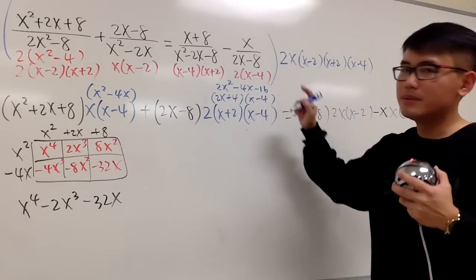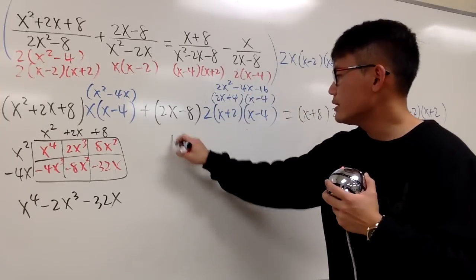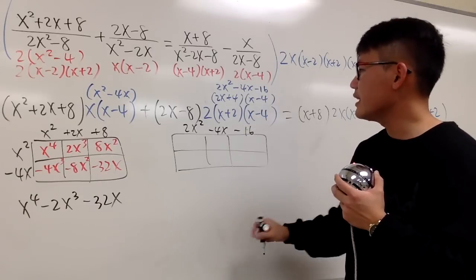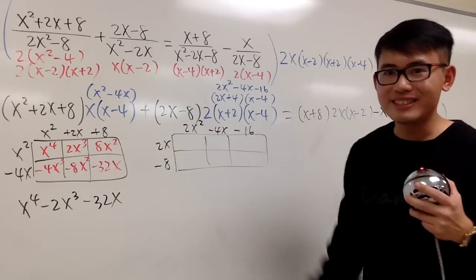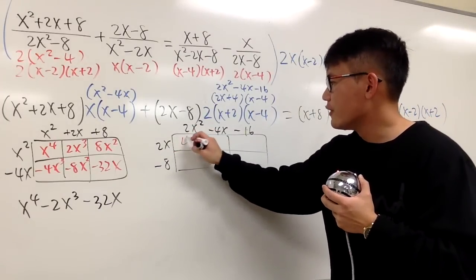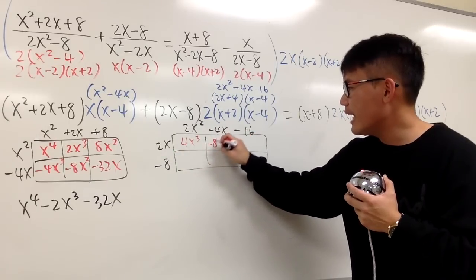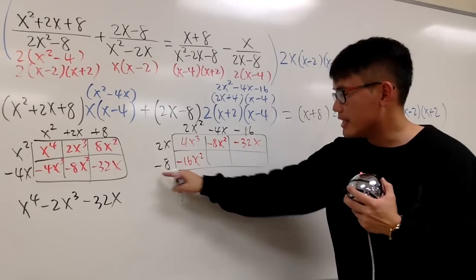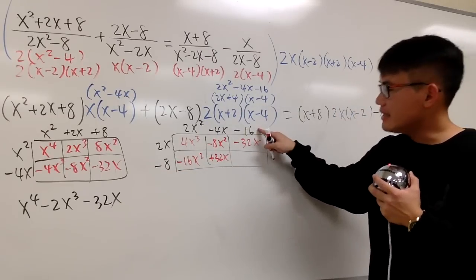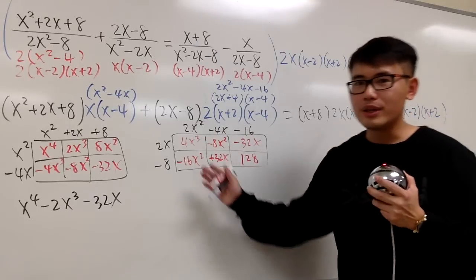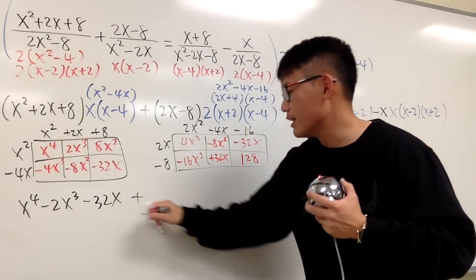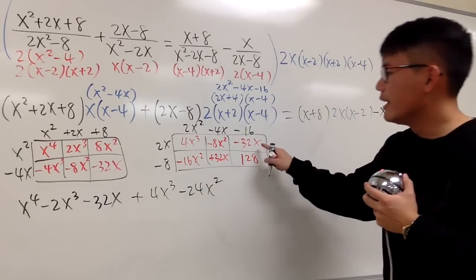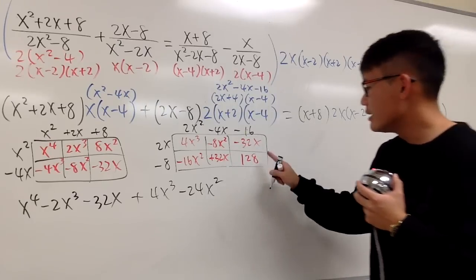And once again, we have a two-term situation times another three-term situation. So let me use the box method right here. I will draw the box and put down this on the top: 2x squared minus 4x minus 16. And let me put this on the side. So right here, 2x times 2x squared is going to give us 4x to the third power. This times that is going to give us negative 8x squared. This times that is going to give us negative 32x. And then this times that is going to give us negative 16x squared. Negative 4x times negative 8 is positive 32x. And negative 16 times negative 8 is positive 128. Plus is great because I don't have to change sign. First, we'll have 4x to the third power. And then together that's negative 24x squared. This and that cancel each other out. This is positive 128. So the entire left-hand side gives us this now.